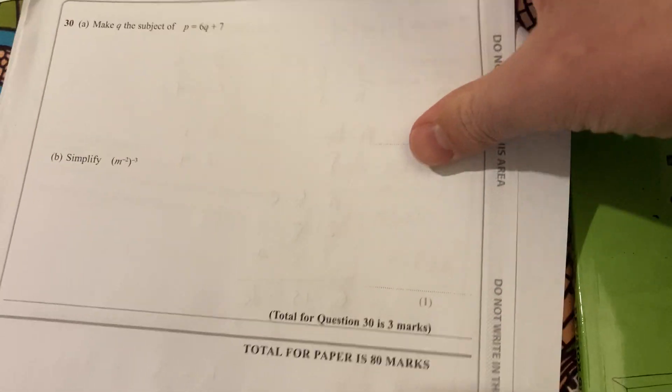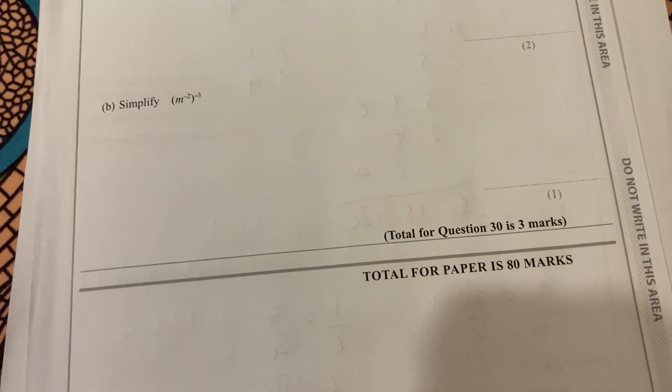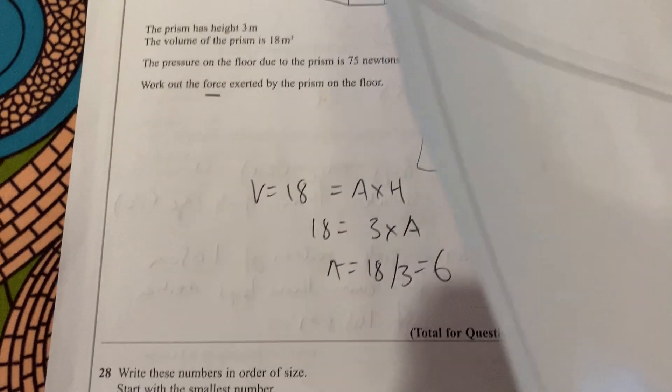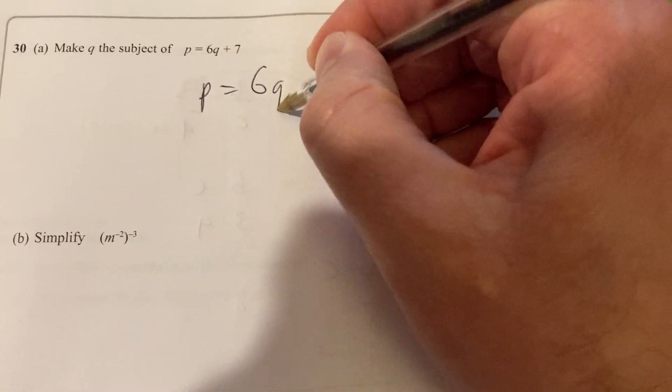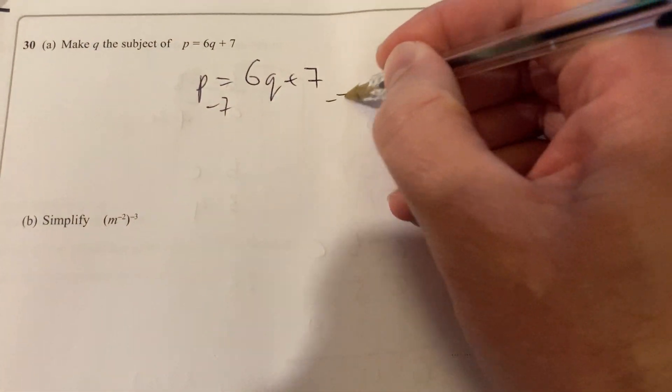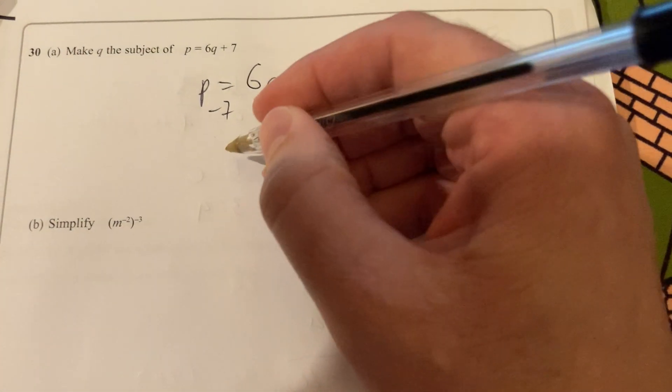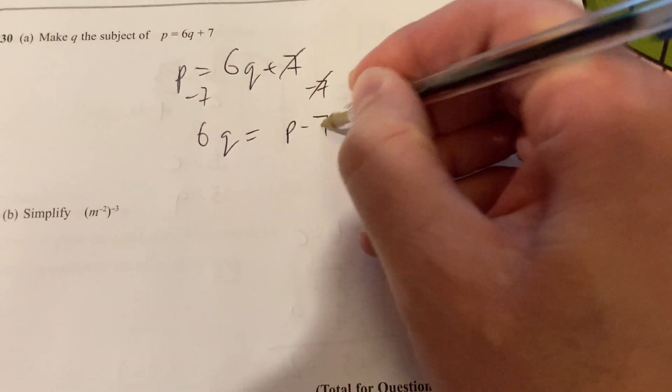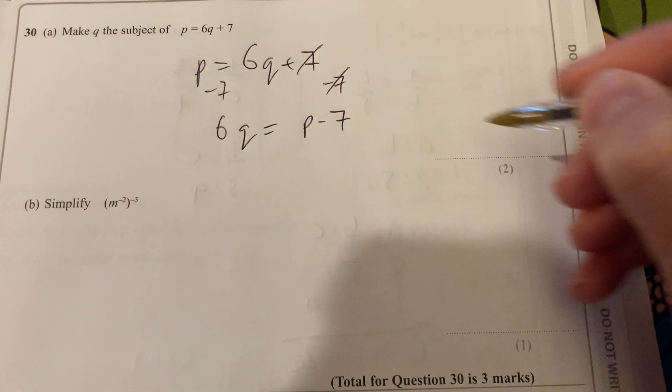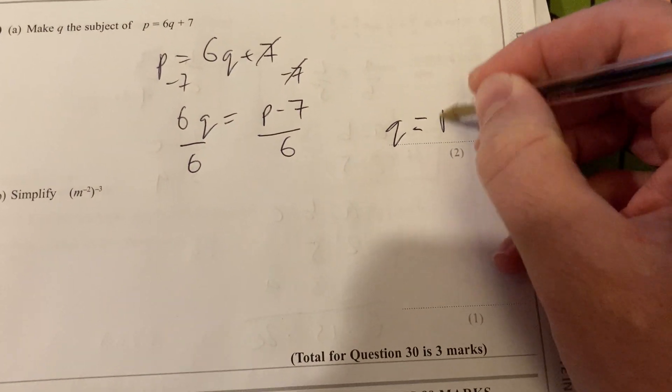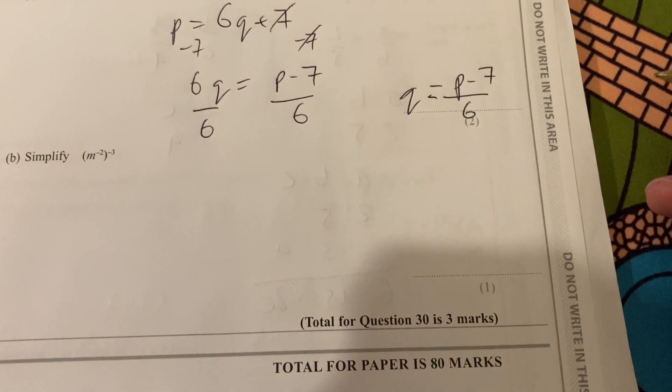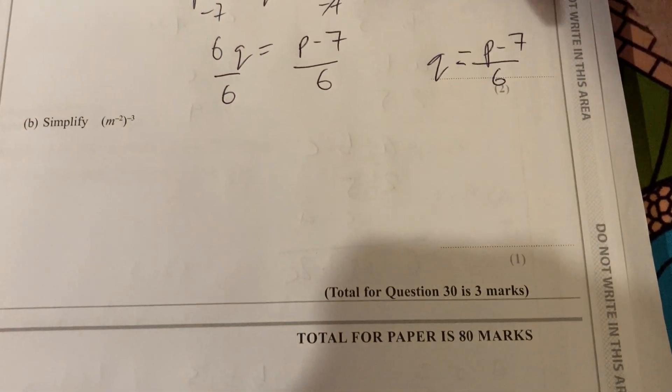Okay, nearly at the end of this paper. Last question here. Oh, I've skipped question 28, I'll go back to it in a second. Make Q the subject of this one, so 6Q plus 7. So I'm going to subtract 7 on both sides. Minus 7 there, minus 7 there, those will fall away. Okay, so 6Q equals P minus 7, then I divide through by 6. So I'm going to divide through by 6, divide through by 6. So Q will equal P minus 7, all over 6.